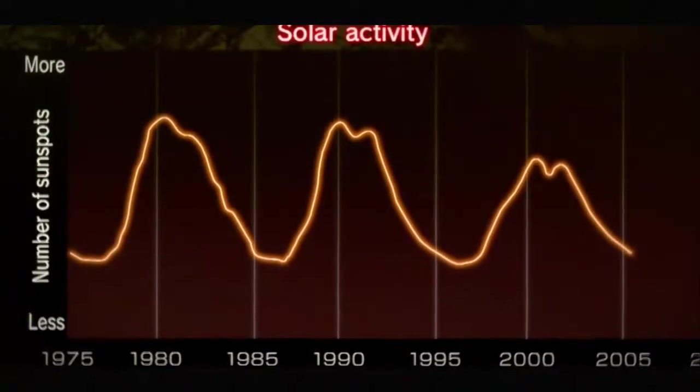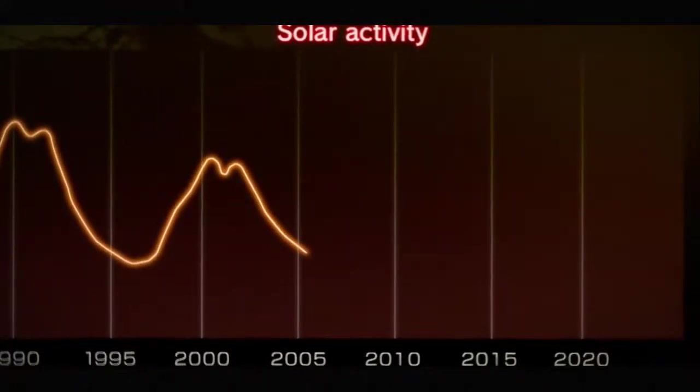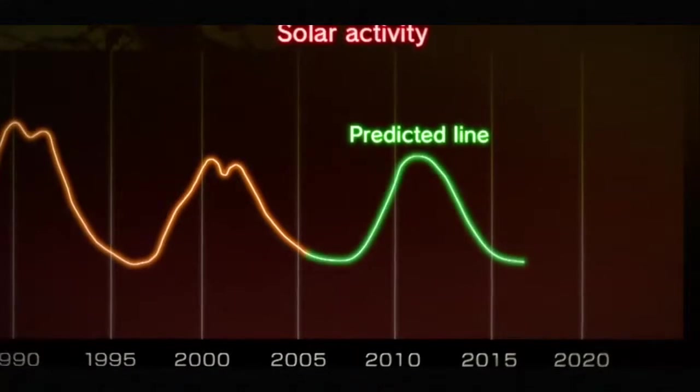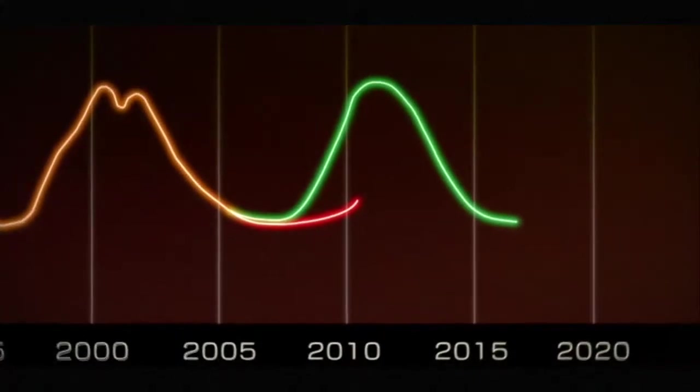Having hitherto marked regular cycles of 11 years, the sun was due for a peak in activity in 2011. However, the number of sunspots is yet to noticeably increase. In short, the sun's regular cycles have started to go awry. And it is believed this sudden change may have a major impact on Earth.